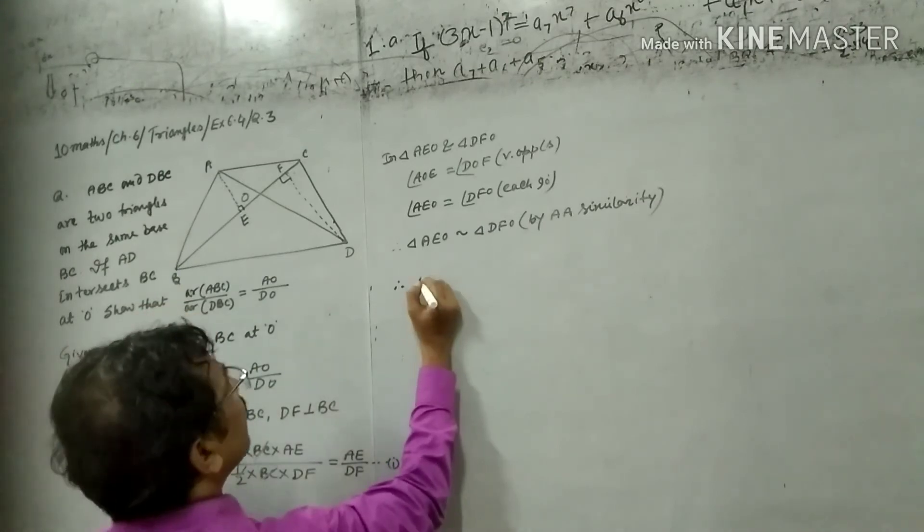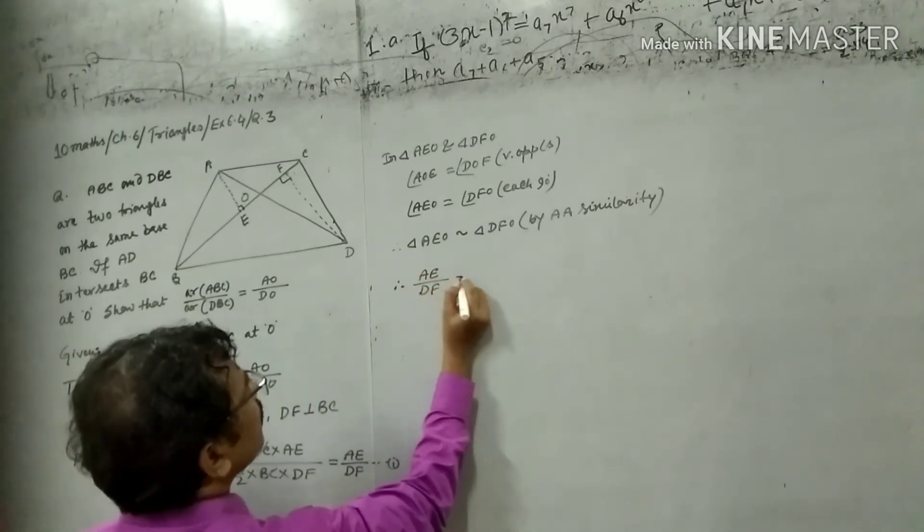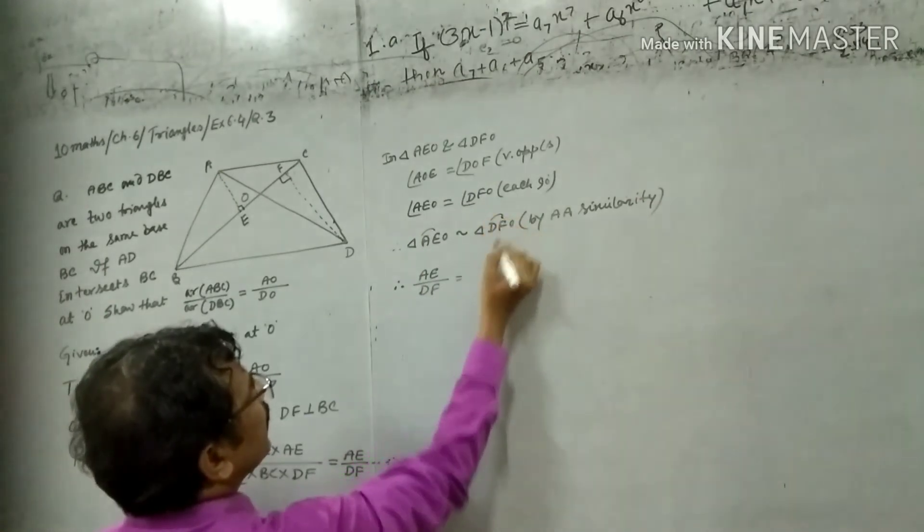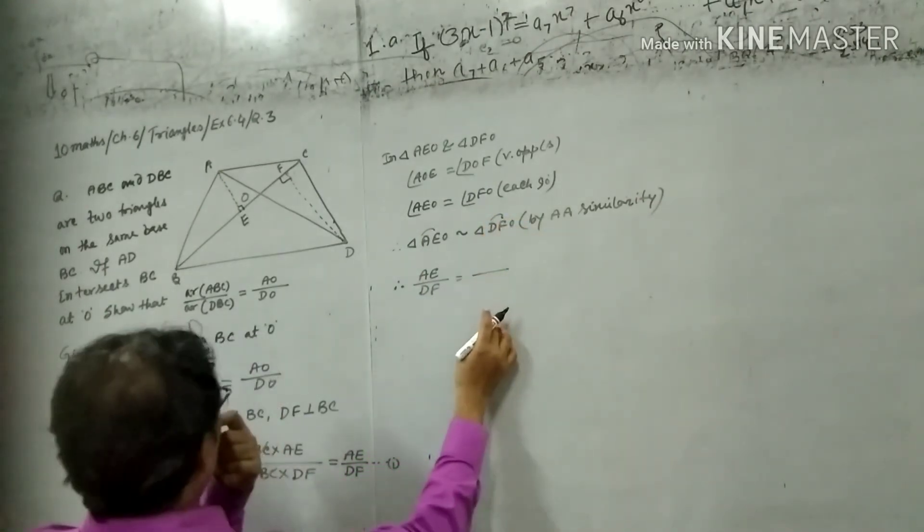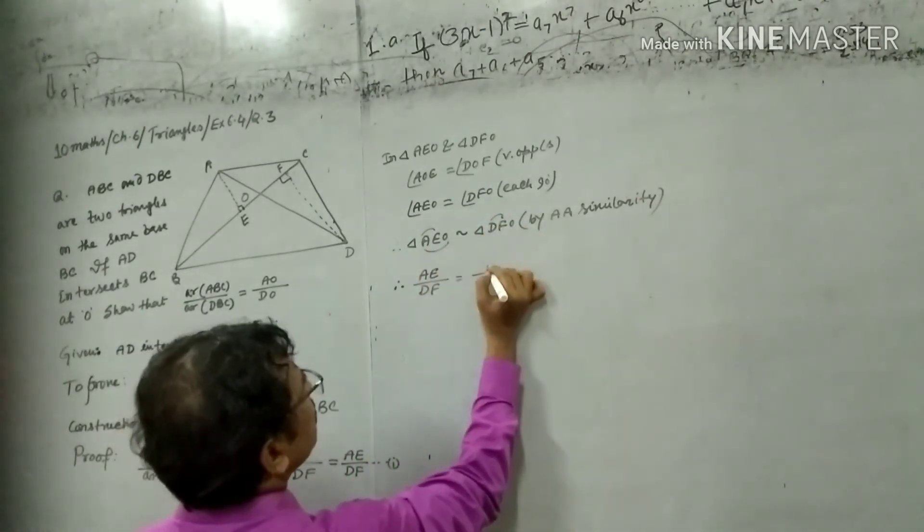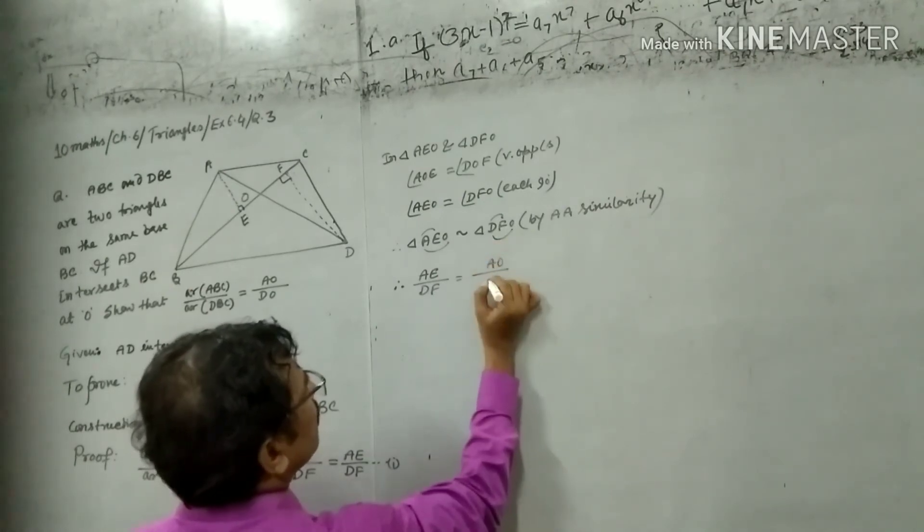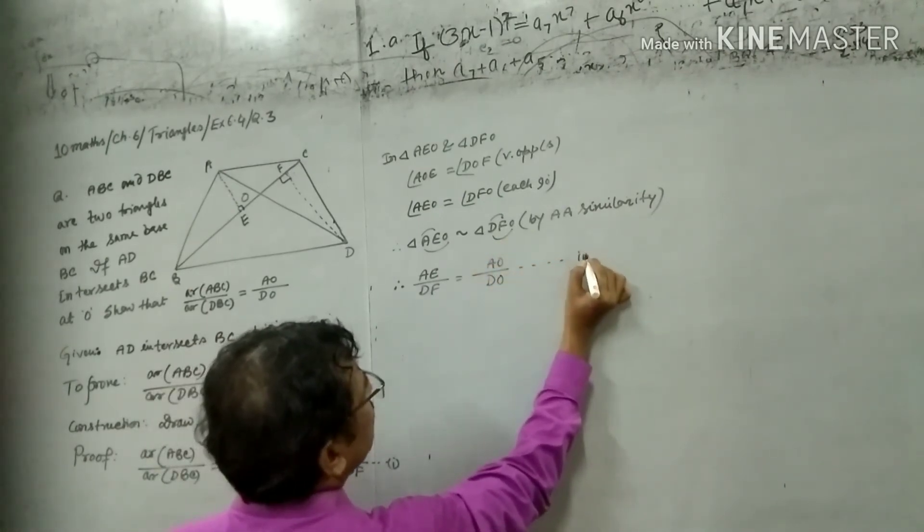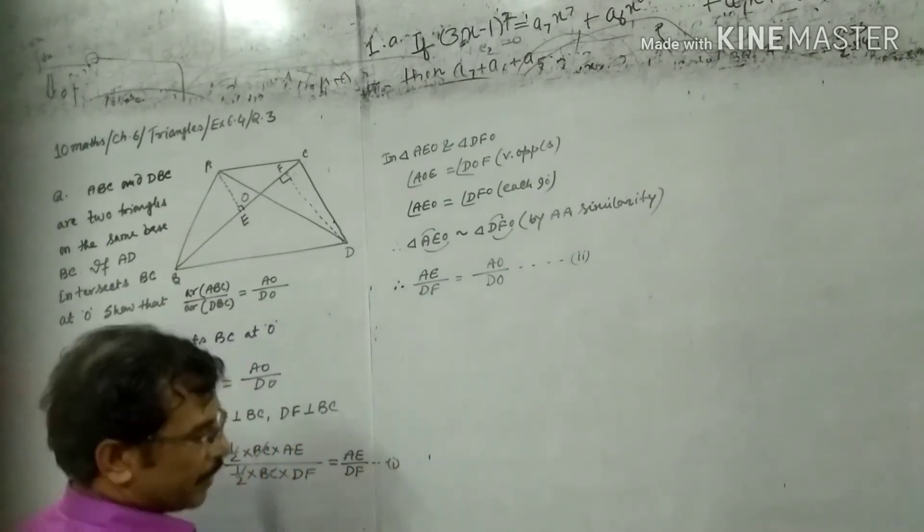Therefore, AE upon DF equals to AO upon DO. This is equation 2. This is the first.